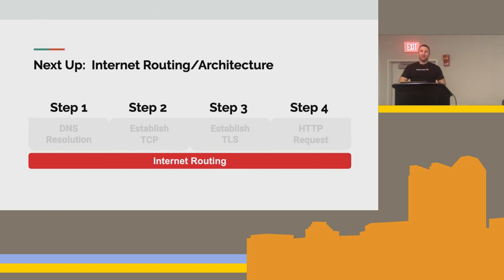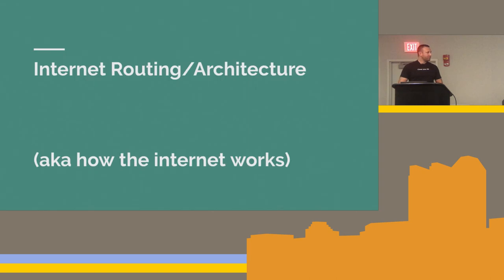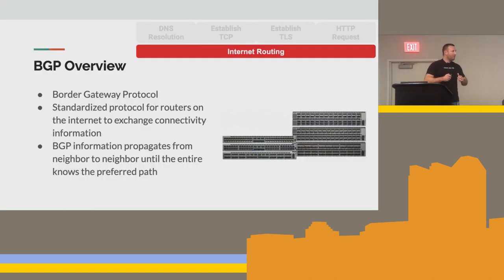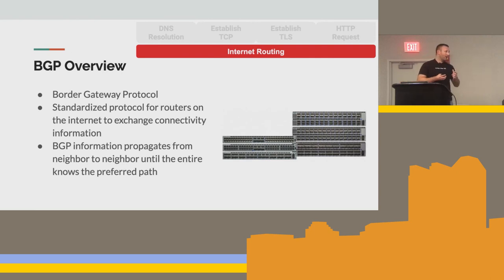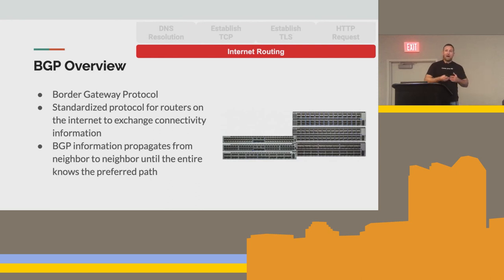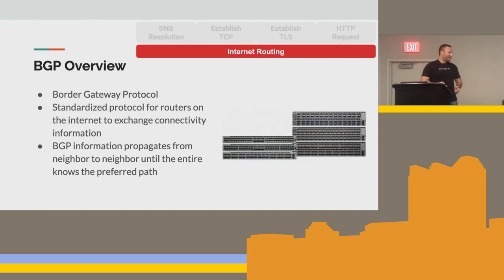Next we'll talk about internet routing and internet architecture — how does the internet actually work? The first protocol we have to talk about is BGP — the border gateway protocol. Its job is to give routers the ability to negotiate routes between them about where they can get to. BGP is kind of the backbone protocol of the entire internet. It's really insecure and it's amazing the internet even works, because anybody can BGP hijack at any point in time — and it happens all the time. It's very eventually consistent, and there are a lot of problems with it.